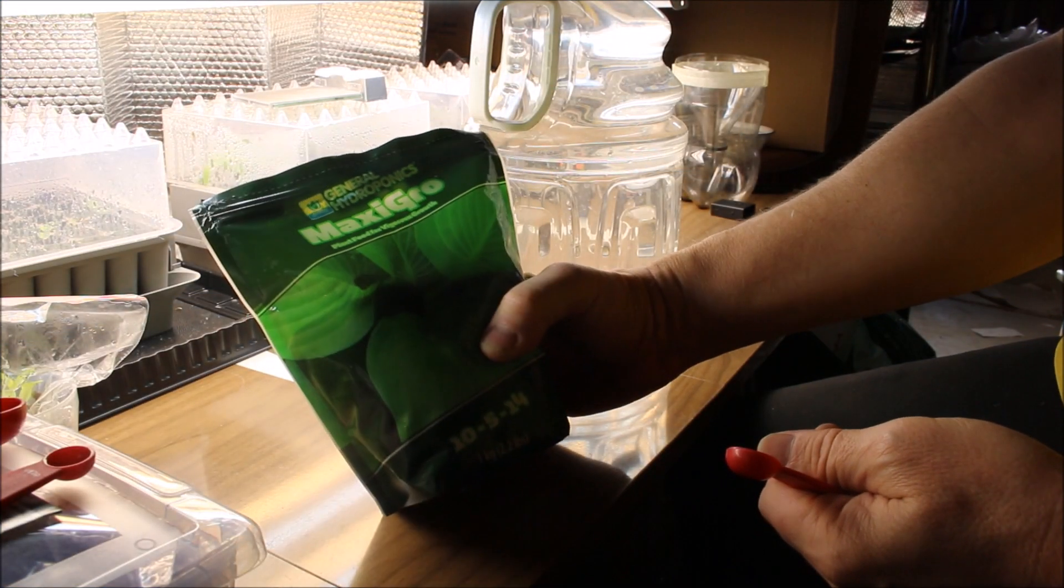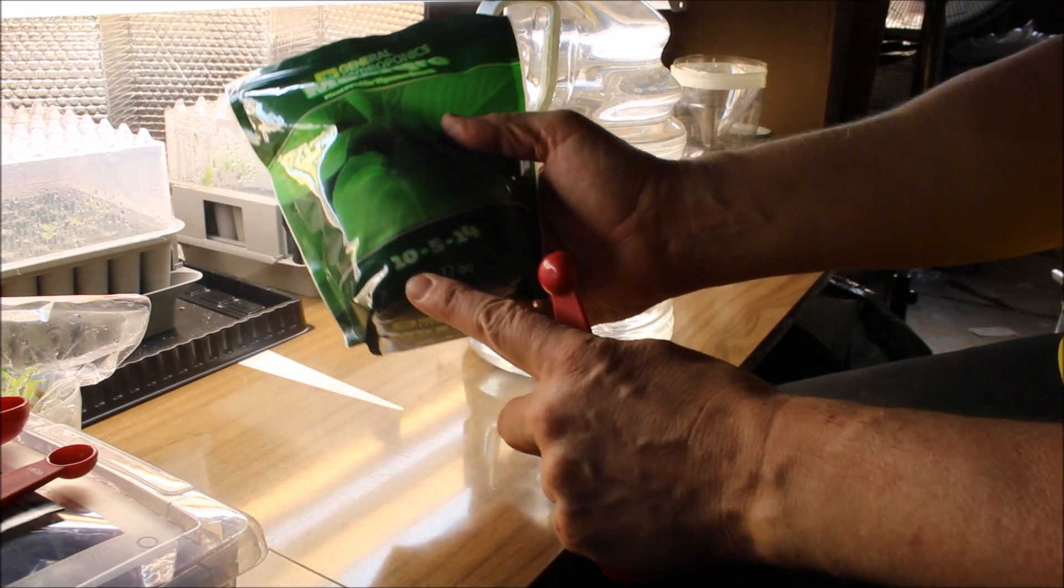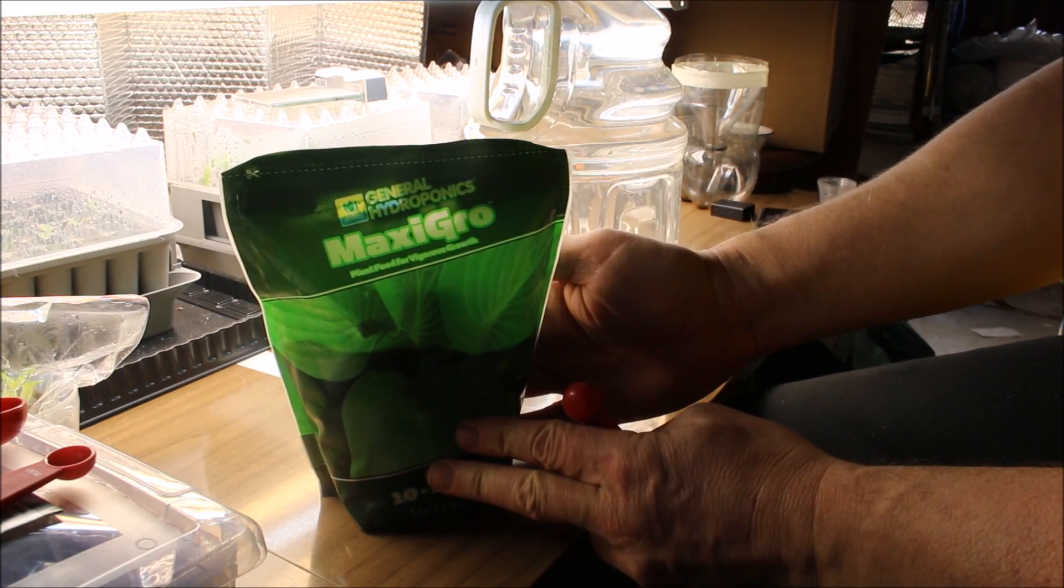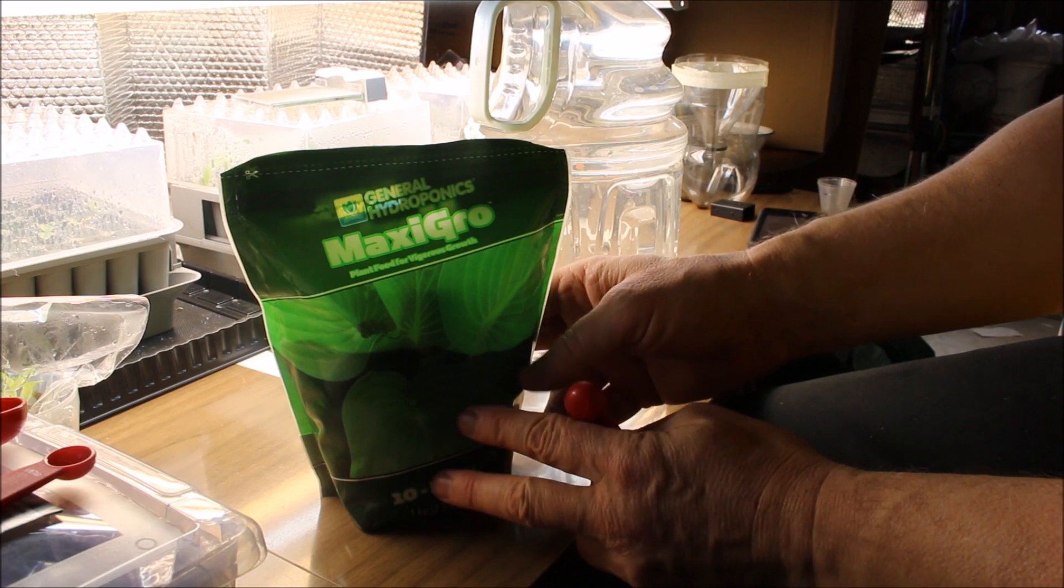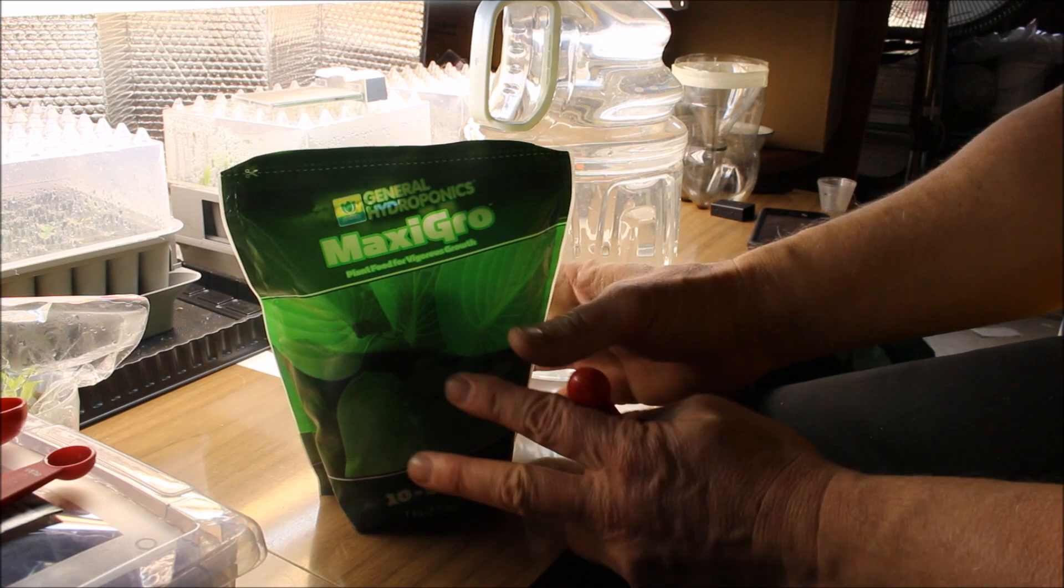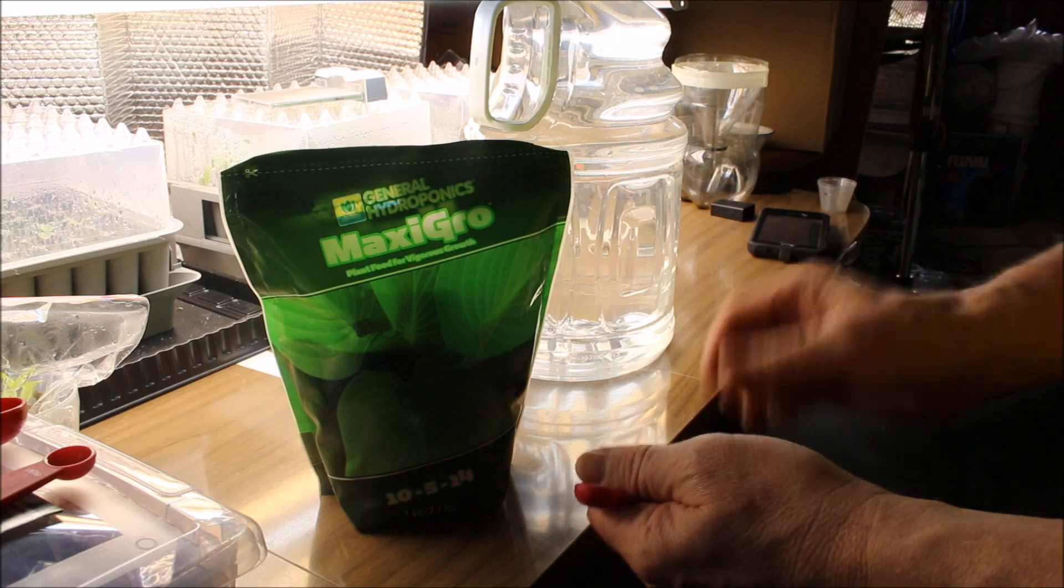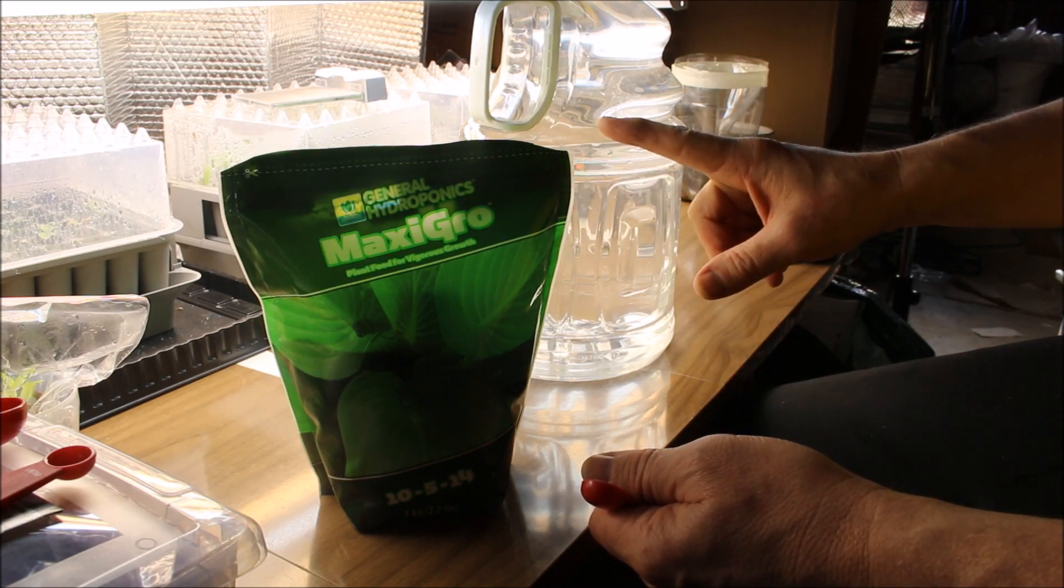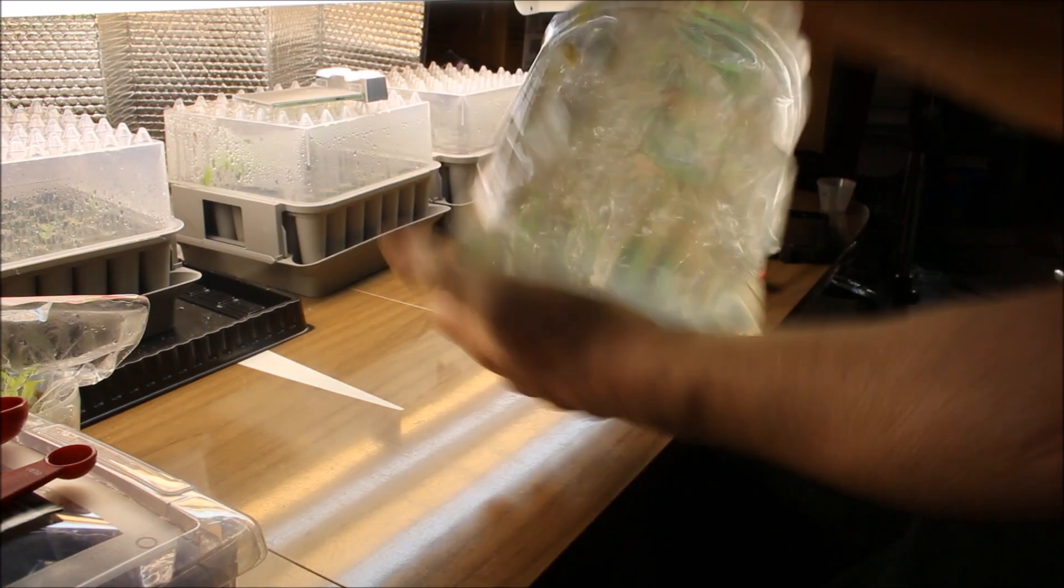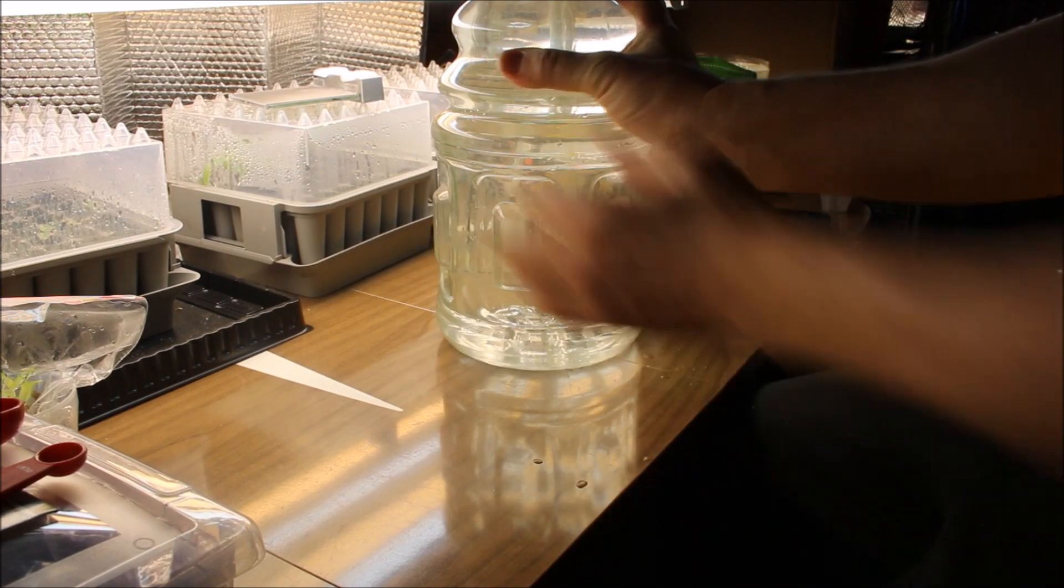For my purposes I'm going to be using Maxi Grow as my nutrients which is a 10-5-14. General hydroponics suggests that you mix this in a ratio of one to two teaspoons per gallon. But I've found that I get burning happening with it. So I use it at half of these strengths. So I'm going to be measuring out half a teaspoon into this already pre-measured one gallon container. And I'll let this sit and stabilize for a few minutes.